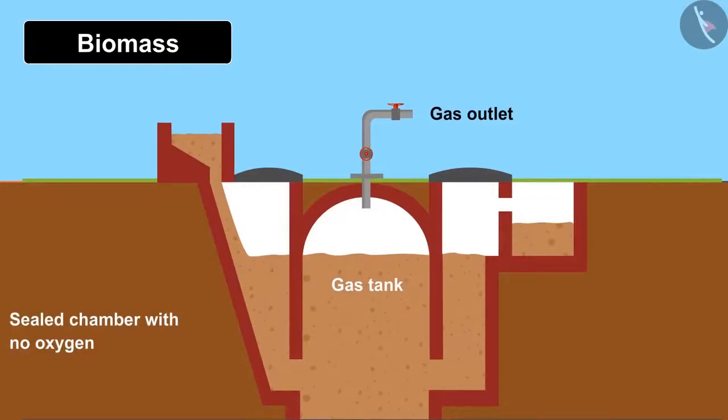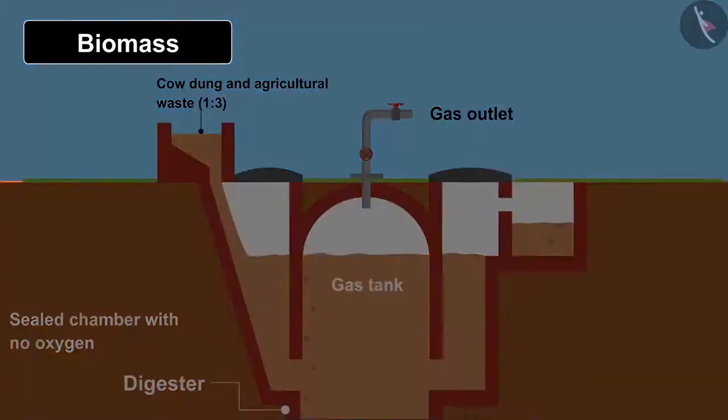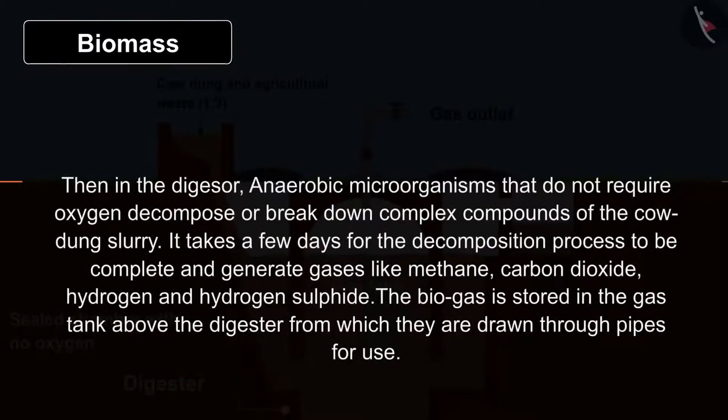First step to construct a biomass plant is to dig a large hole in the ground which is known as digester. Cow dung and agricultural waste are filled with the water in the ratio of 1 is to 3 from the mouth of the plant. Then in the digester, anaerobic microorganisms that do not require oxygen decompose or break down complex compounds of the cow dung slurry.